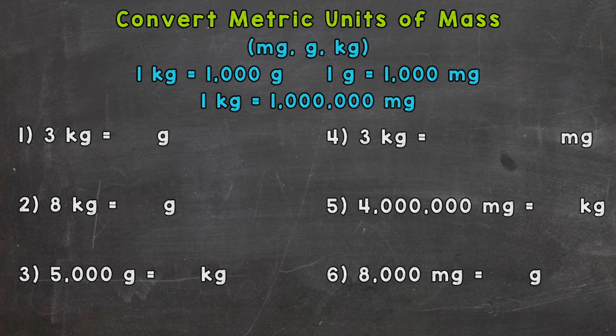Our base unit of mass for the metric system is going to be a gram. So everything's going to be based around that gram. The other units of mass are going to have prefixes attached to gram, and that's going to tell us what those units of mass mean.